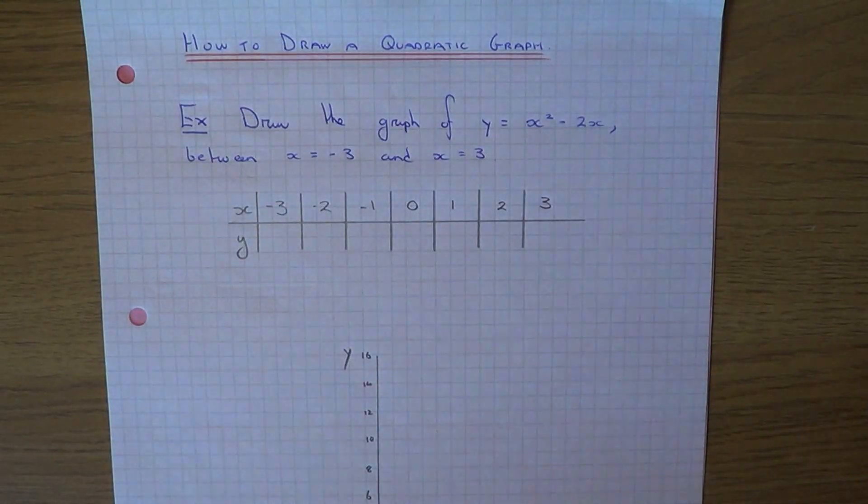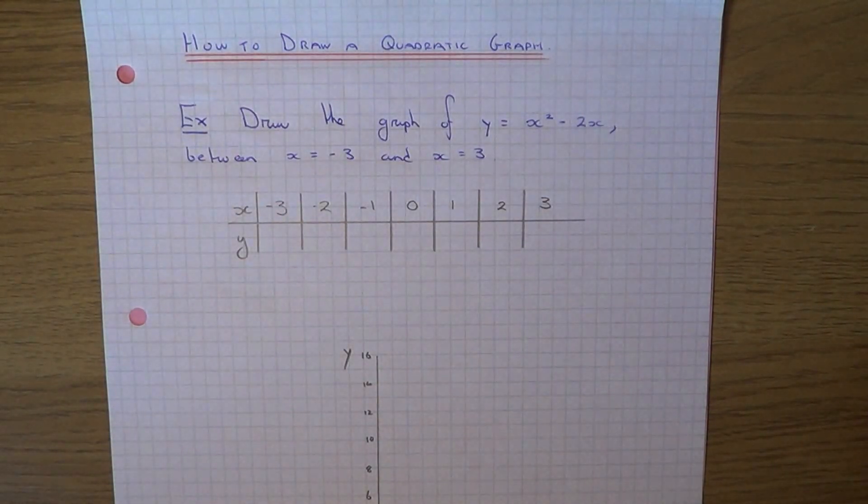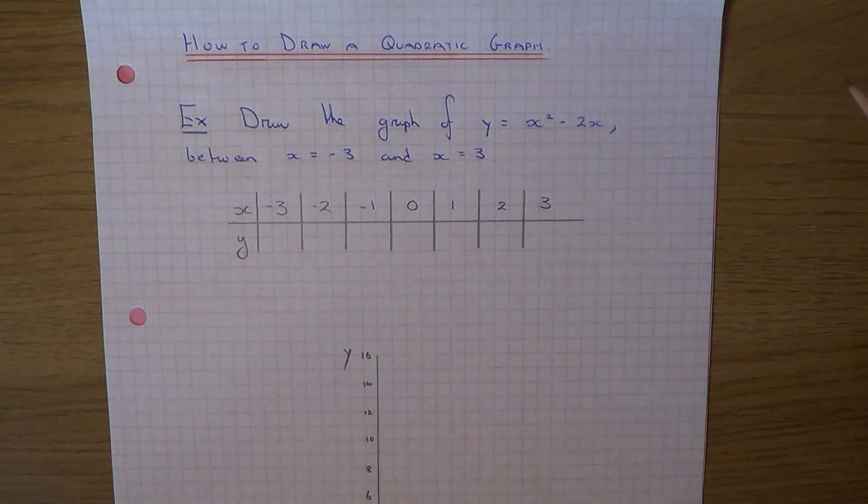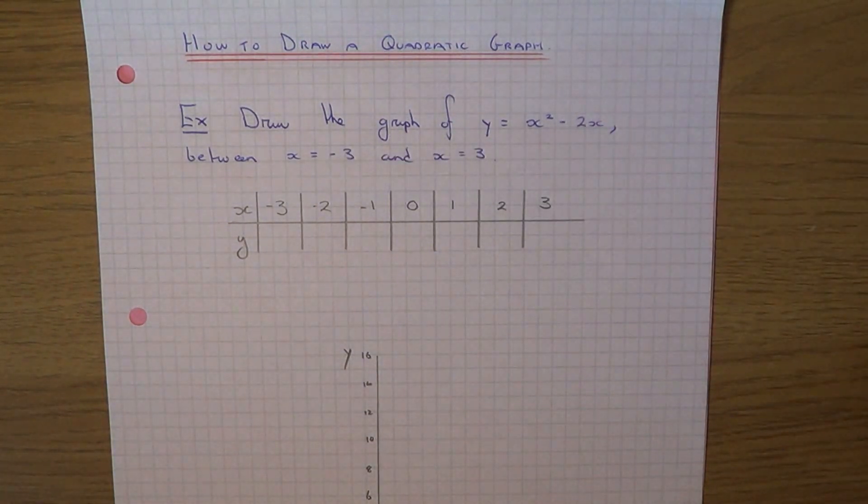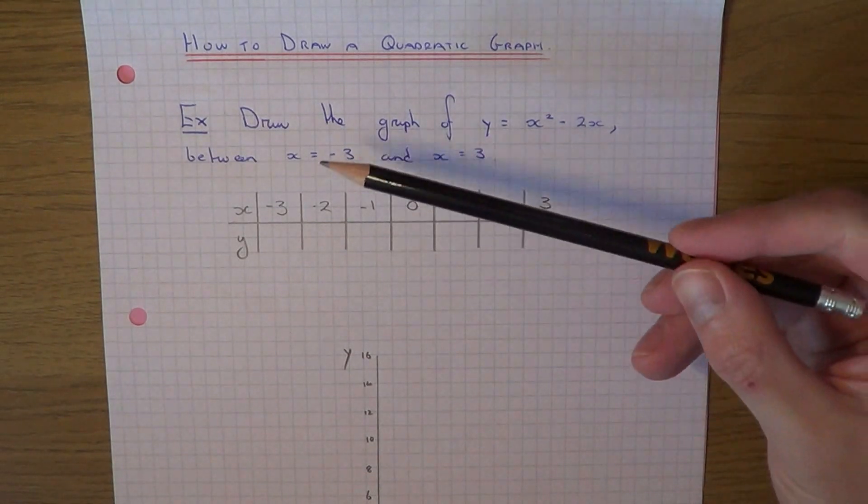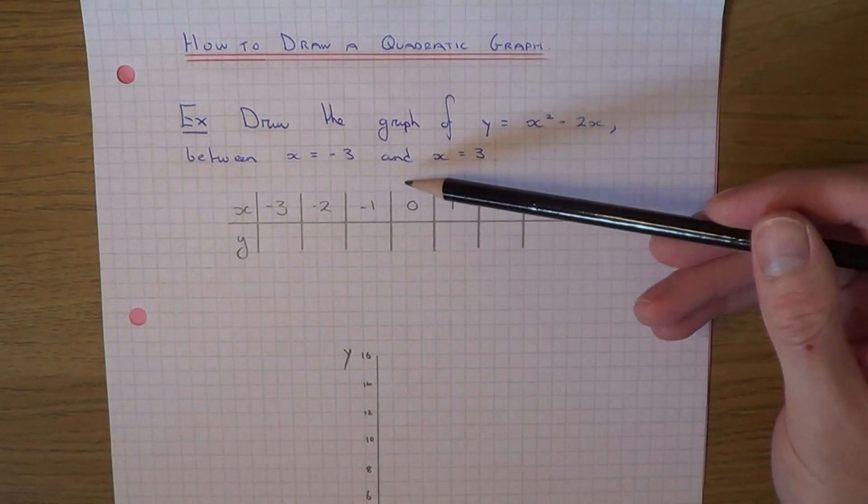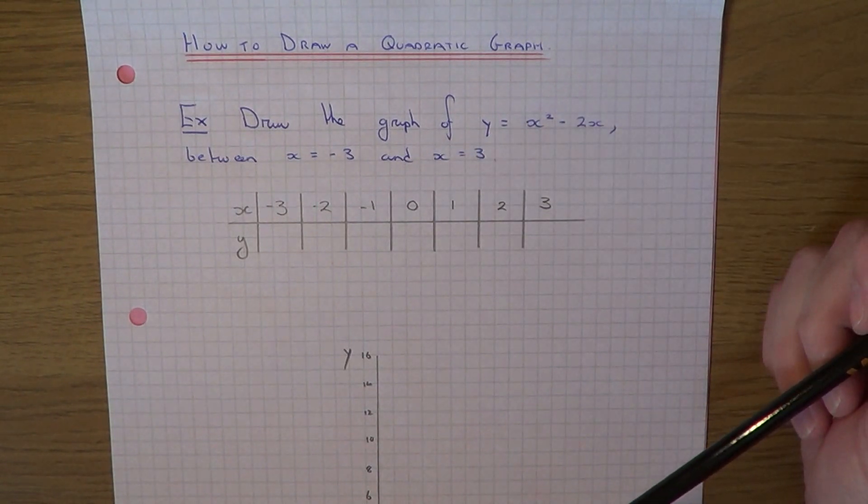Today I'm going to show you how to draw a quadratic graph. Let's have a look at the example here. We need to draw the graph of y equals x squared minus 2x between the values x equals minus 3 and x equals plus 3.